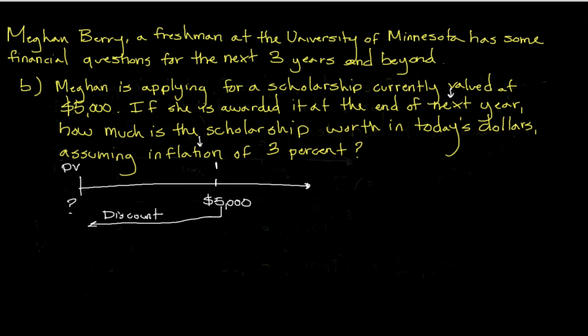Let me first show what the present value formula is. It's very similar to future value, but we make a couple of changes. The present value is the equivalent of the future value divided by one plus our interest rate to the nth power. Notice this is very similar — we're just making some rearrangements to get the desired result.